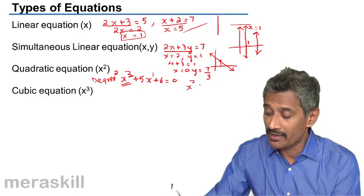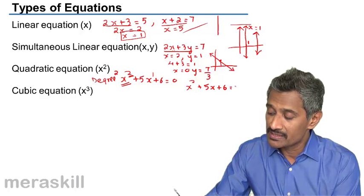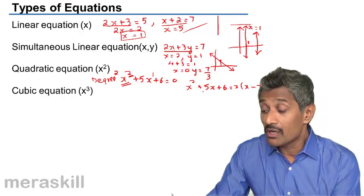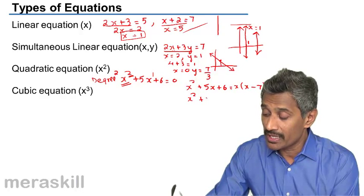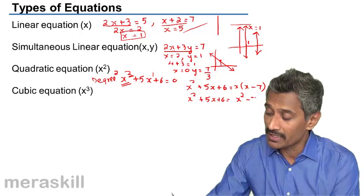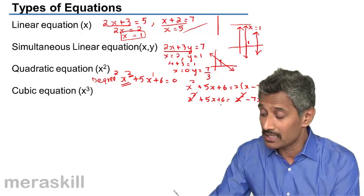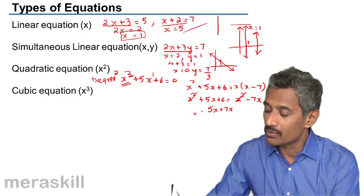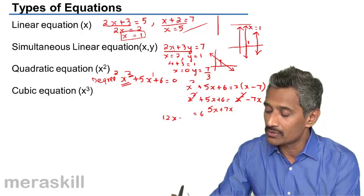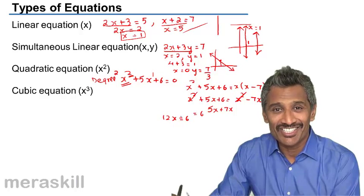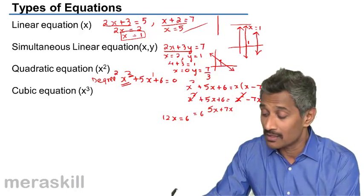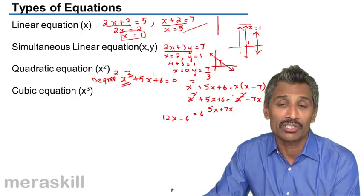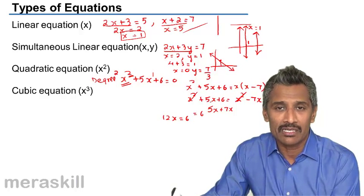But if you have x squared plus 5x plus 6 equals x times (x minus 7), is this a quadratic equation? We need to simplify: x squared plus 5x plus 6 equals x squared minus 7x. The x squared terms cancel, leaving 5x plus 7x equals 6, so 12x equals 6. This is actually a linear equation — so we must simplify first before deciding the type.